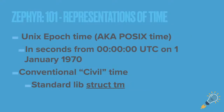Here are the two different kinds of representations of time in Zephyr. This is pretty much standard across Unix POSIX systems — like macOS or Linux. The Unix epoch time is just the amount of seconds from 00:00 UTC on 1 January 1970. And then the conventional civil time is what we know it as — it includes the date and time formatted the way we know, like 4/14 at 14, meaning 2 PM on Thursday, April 14th. That is represented by a struct called struct tm.